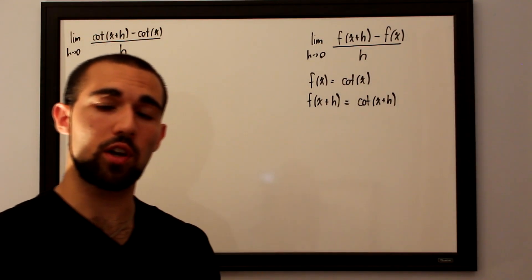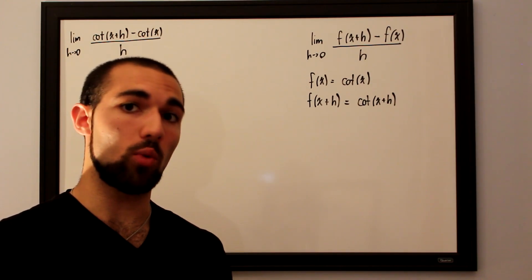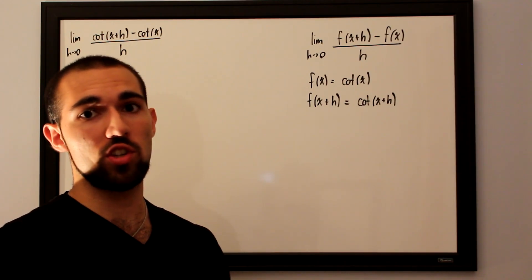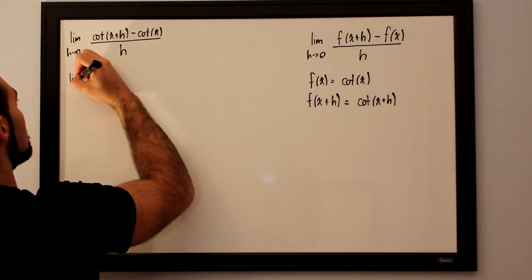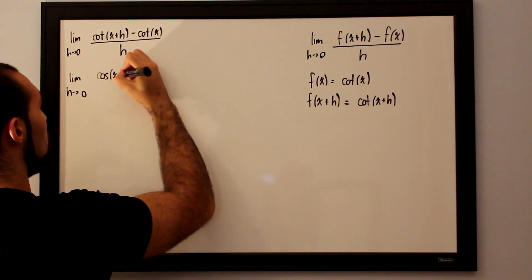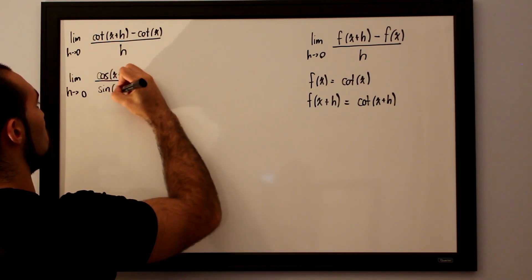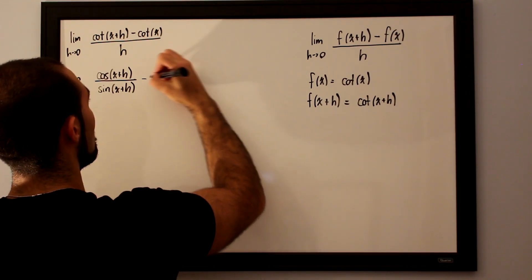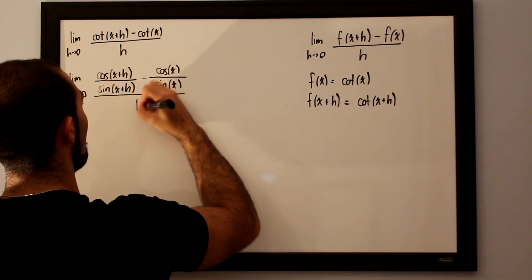What we want to do here is split cotangent up into its two constituent functions, sine and cosine. Cotangent is cosine divided by sine of x. So we can write this out as the limit as h approaches 0 for cosine of x plus h over sine of x plus h, minus cosine of x over sine of x, all of this divided by h.